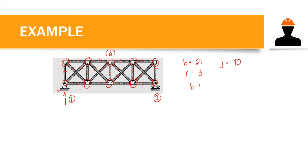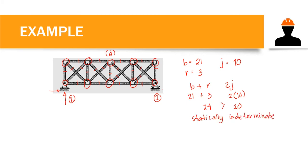Using the formula B plus R equals 2J: we have 21 plus 3 equals 24 on the left side, and 2 times 10 equals 20 on the right side. Since the left side is greater, this structure is statically indeterminate. The degree of indeterminacy is 24 minus 20, which equals 4 — so it is indeterminate to the 4th degree. For stability, this structure is externally and internally stable because all reactions are non-parallel and non-concurrent.